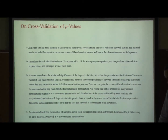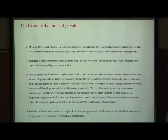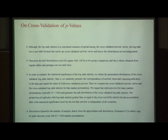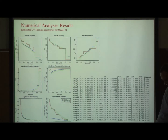Another thing to cross-validate is p-values, because observations are not independent anymore when using cross-validation. The null distribution for the log-rank statistic — chi-square with one degree of freedom — is not applicable anymore. So I use a permutation scheme to compute p-values.